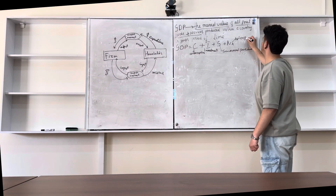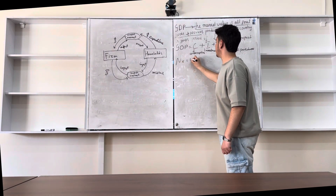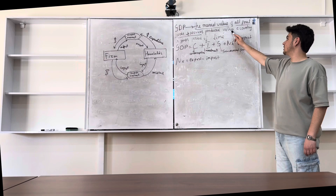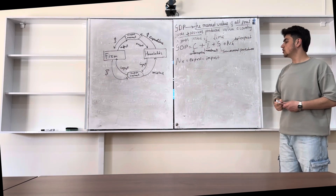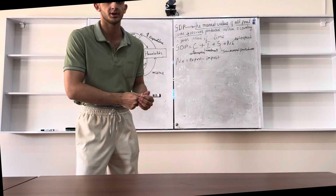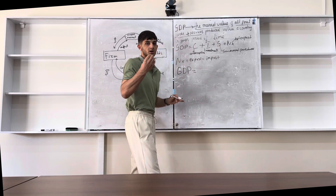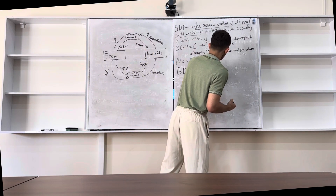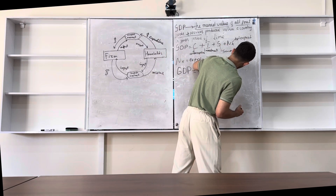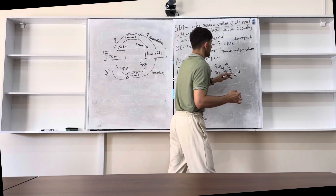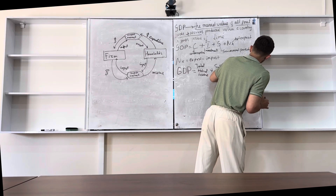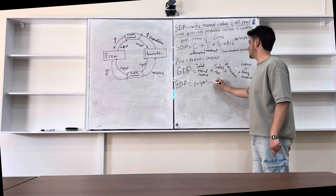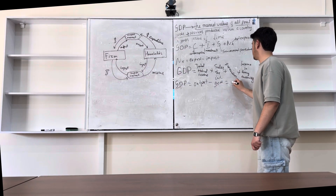How about NX? NX is net exports. The net export formula is exports minus imports. Because GDP is measured within the country, we subtract imports. We have another way to compute GDP. The second way is: GDP equals total national income — which can be the same amount — plus governmental sales taxes, plus depreciation of investment, plus net foreign currency income. Now the third formula: GDP equals output minus intermediary goods, which equals final output.